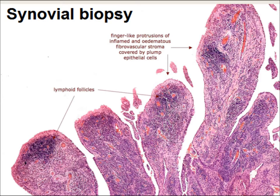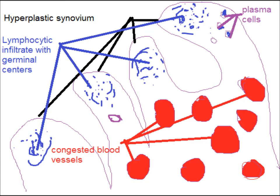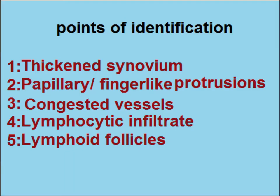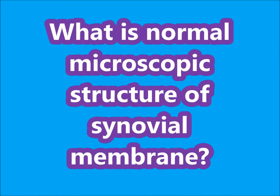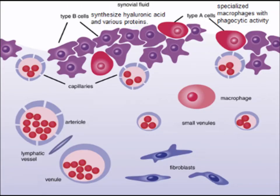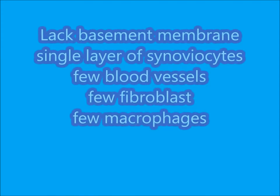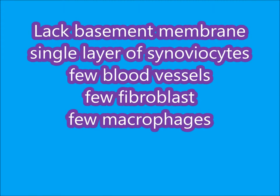Synovial biopsy from the patient reveals hyperplastic synovium with infiltration of lymphocytes and plasma cells, and there are congested blood vessels. Key points of identification are: thickened synovium, papillary finger-like protrusions, congested vessels, lymphocytic infiltrate, and lymphoid follicles. Normally, the synovial membrane lacks a basement membrane, consists of a single layer of synoviocytes, with few capillaries, fibroblasts, and macrophages.